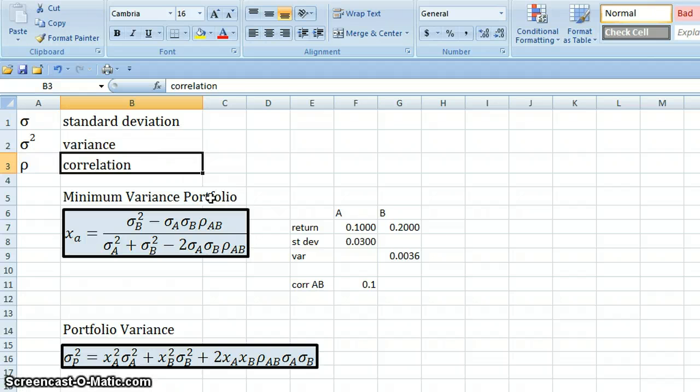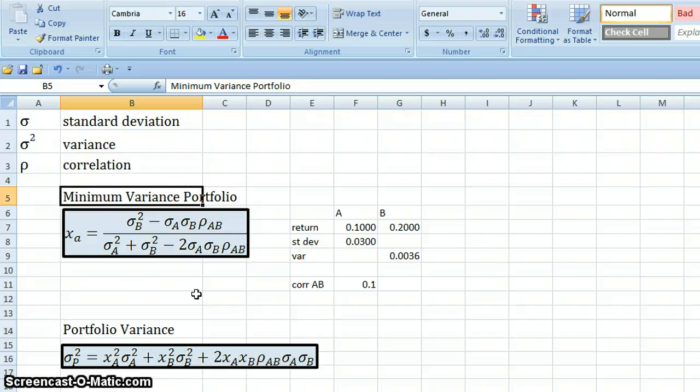We also have the Greek letter rho here, which is going to stand for the correlation between two things. First thing we might want to do is find the minimum variance portfolio, or in other words, if we have two stocks, how do we put them together in such a way that we end up with the least risk or variance? So here we have stock A and stock B, and we have some information about them: their return, the standard deviation and the variance, and the correlation between the two things.